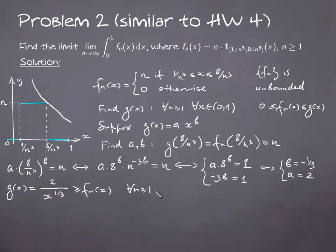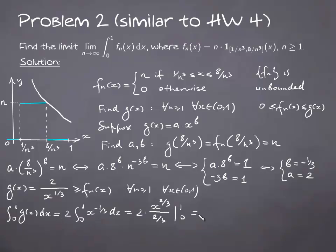That function dominates fn(x) above for every n and every x. Clearly this function is integrable — computing the integral, we can just compute the improper integral, and the integral is finite and equal to 3. Therefore, we can apply the dominated convergence theorem.